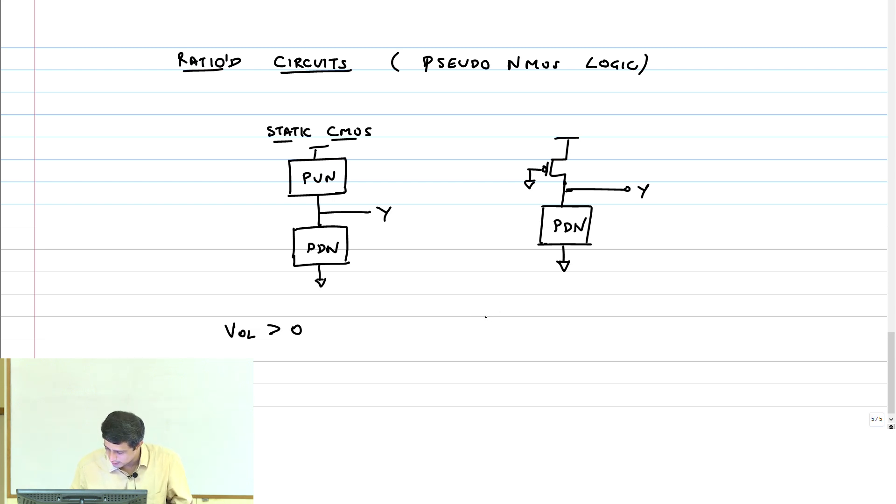Let us consider a pseudo NMOS inverter with only one NMOS transistor connected to the input A. A is not connected to the PMOS transistor. I now want to calculate what happens when A equals VDD. Y will be VOL. Of course, VOL now has to be close to ground, otherwise this gate is going to be useless. In what region of operation is the PMOS transistor?